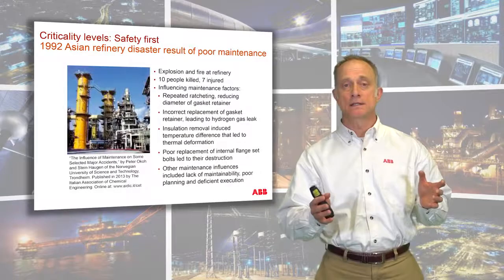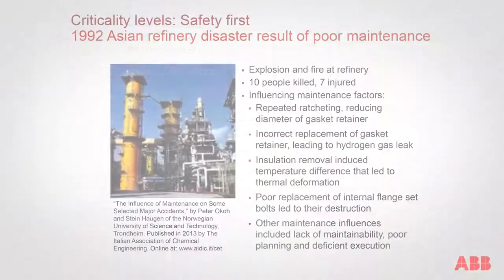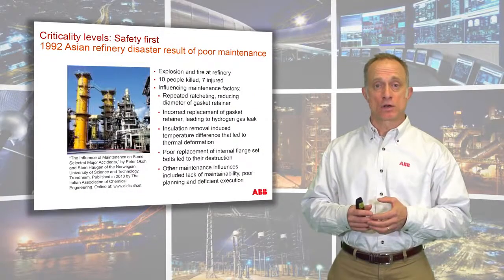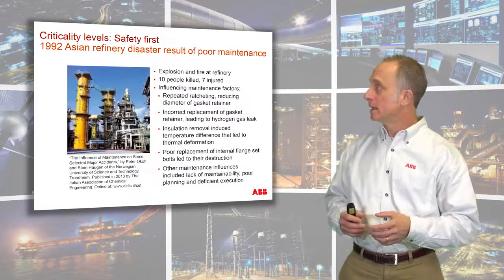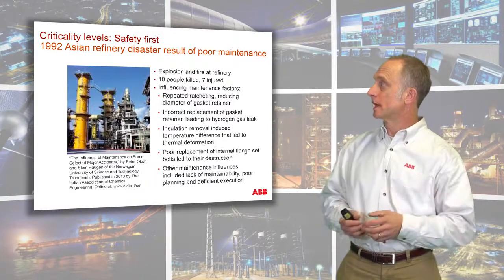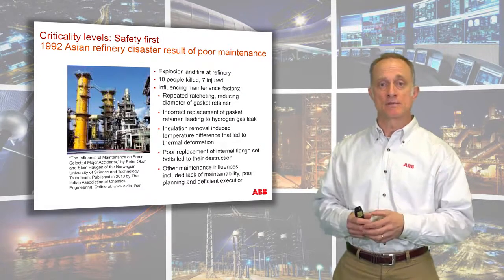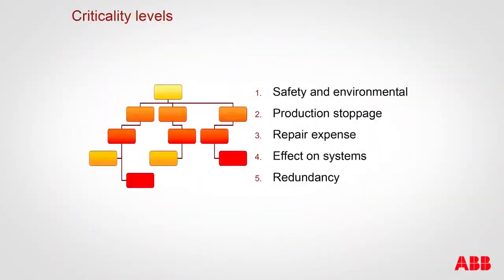For criticality, let me state this clearly: the first consideration should always be safety. Here we have an example of a refinery in Asia that exploded in 1992, killing a number of people and injuring many more. When the analysis was done on why the explosion occurred, it was determined it was really a maintenance failure — repeated ratcheting reducing the diameter of a gasket retainer, which could be an example of too much preventive maintenance. The right maintenance approaches weren't taken, and it led to a disaster. Safety is always number one in criticality analysis.